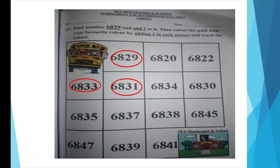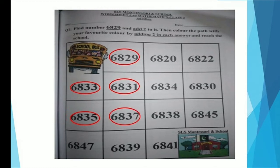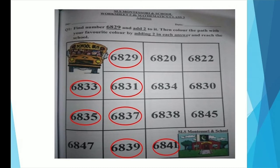Now repeat the process and add 2 in 6833 — yes, we will get 6835. Now add 2 more — correct, it's 6837. Now add 2 in 6837. Tell me, what is the next number? Very good, it's 6839. Children, we are quite near to our school!